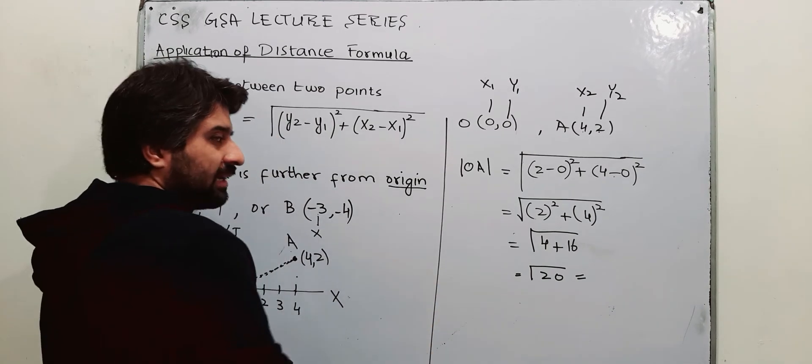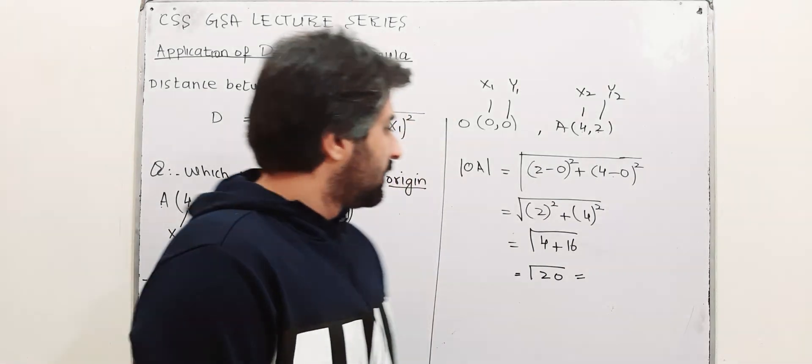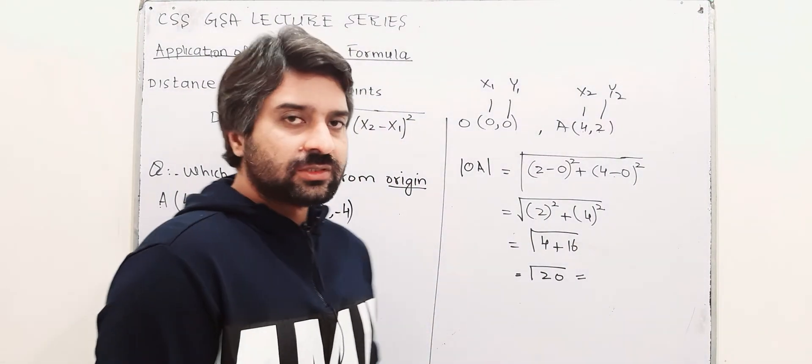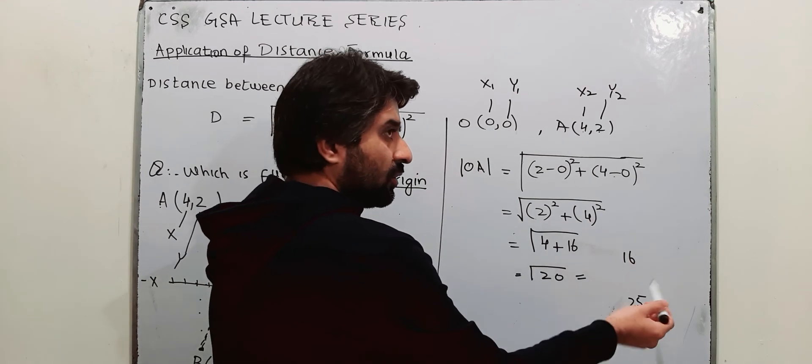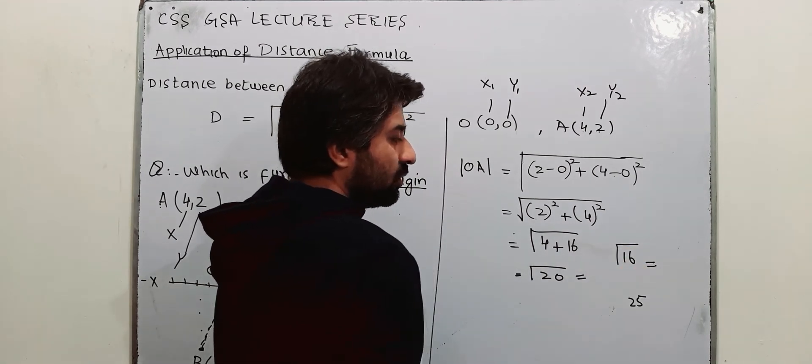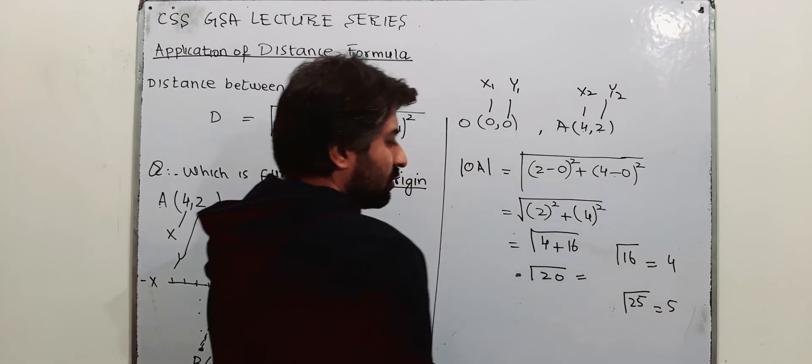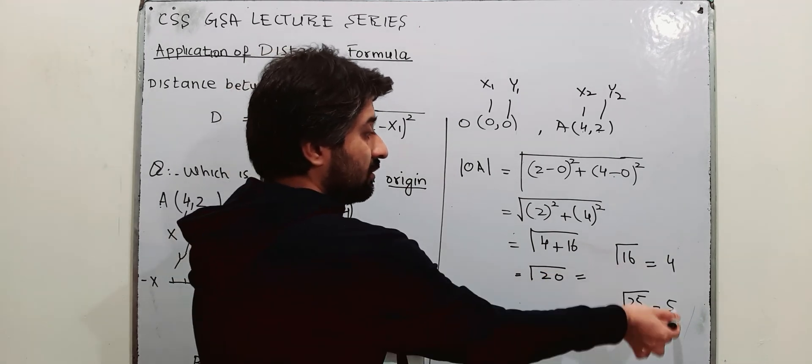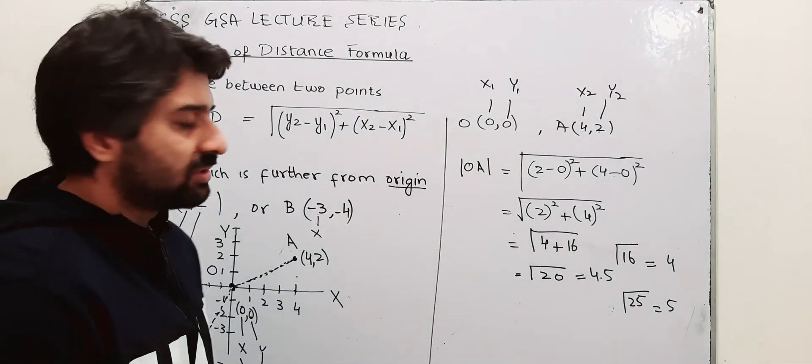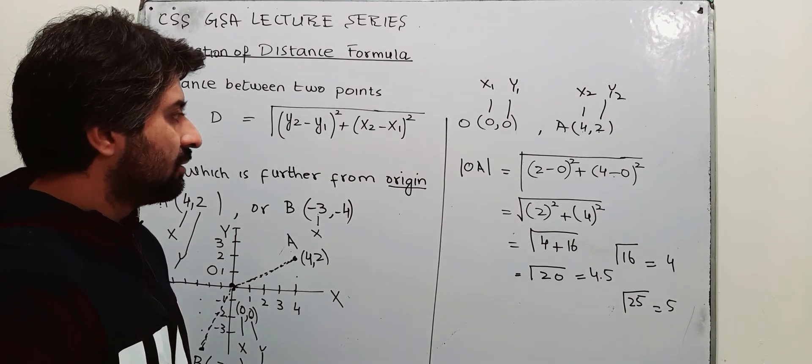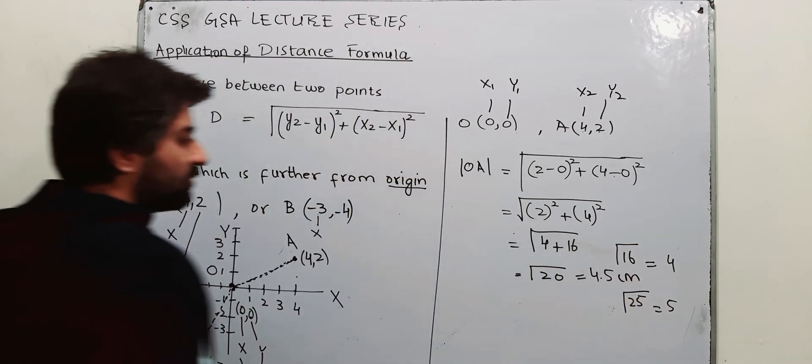The square root of 20, you don't have a calculator in the paper, calculator is not allowed. So what to do? 20 is between two square numbers. 20 is between 16 and 25. 16 is a square number, square of 4. If you take square root of 16, your answer is 4. If you take square root of 25, your answer is 5. So square root of 20 should be between these two. Let us take it as 4.5. It is approximation, estimation. The distance of OA is 4.5, let us take it as centimeter, unit of distance, or meters, whatever.